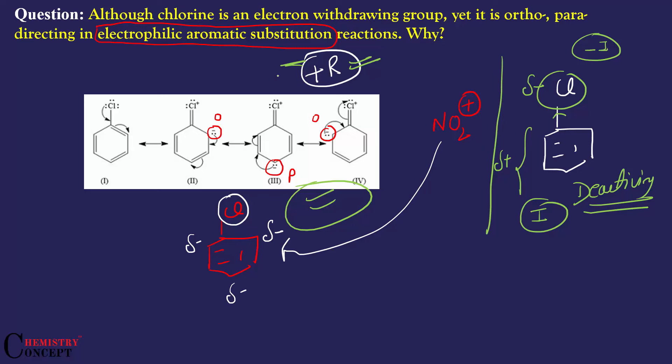So chlorine is ring deactivating overall. But because of resonance, it donates electrons to benzene at ortho and para positions. Overall, benzene reactivity is reduced by chlorine due to -I effect. However, this is partially compensated by the +R effect, but only at ortho and para positions.